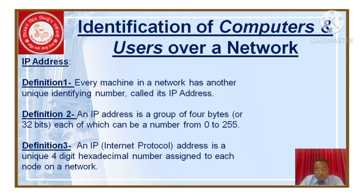Each byte can be numbered from 0 to 255. Third definition: an IP address is the unique 4 hexadecimal numbers assigned to each node on a network. IP stands for Internet Protocol. Protocol is nothing but a set of rules and regulations that every manufacturer follows to assign IP addresses. Protocol is always necessary for nodes in a network.